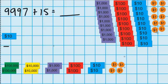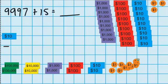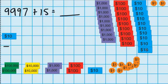There goes 1, 2, 3, 4, 5, 6, 7, 8, 9, 10 — a straight swap for this $10 note.